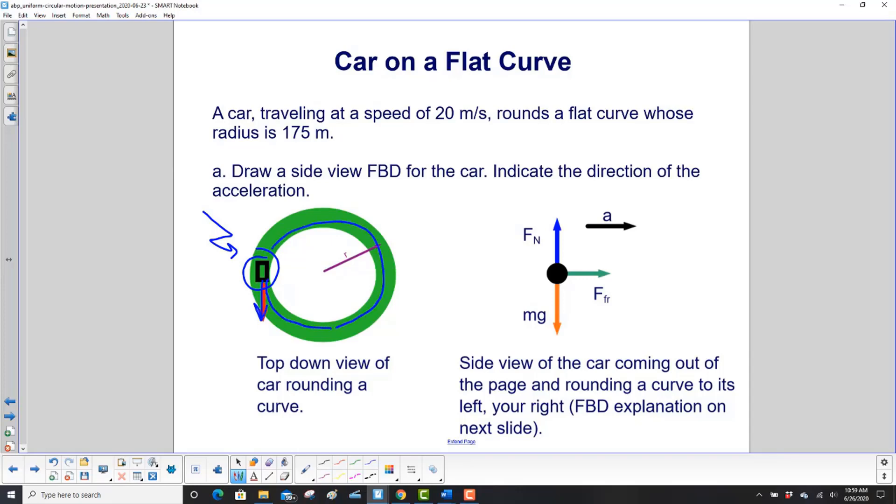Now if it goes around the whole circle, great. But if it just goes for a curve and then goes straight again, that's fine. This circular motion here, we can use our equations. So that's what it looks like from a top-down view.